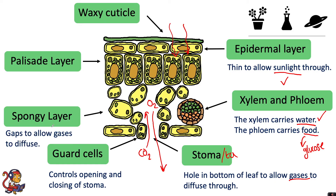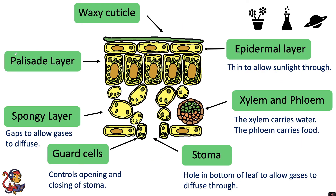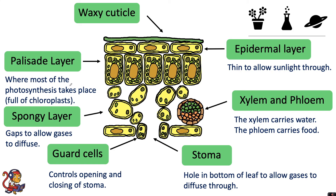The spongy layer has lots of gaps — the cells are not packed close together. This allows the gases, so the CO₂ going in or the oxygen going out, to diffuse. Moving on to the palisade layer — this is probably the most important layer for photosynthesis because this is where most of the photosynthesis takes place. As you can see, they are full of chloroplasts, and these chloroplasts contain the green pigment called chlorophyll, which is needed to absorb the sunlight.